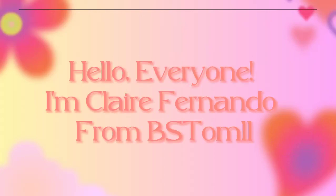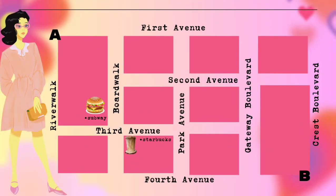Hello everyone, I'm Claire Fernanda from Bachelor of Science in Tourism Management. For today's lesson, we will tackle a problem solving activity. Consider the following map: Anna wishes to walk along the street from point A to point B. How many direct routes — no backtracking — can Anna take?